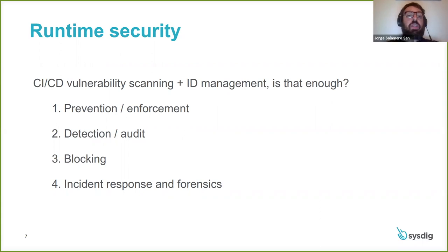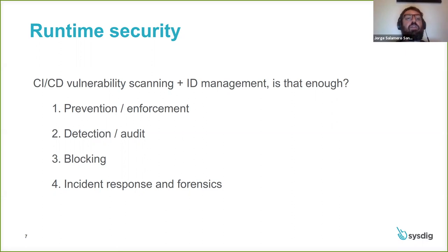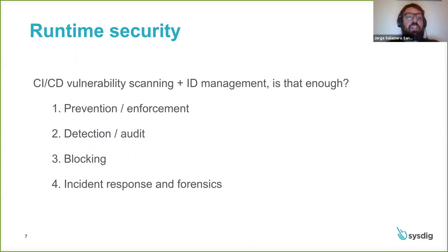When I explain runtime security, I like to split it into four phases. Number one is prevention or enforcement — this is basically when we set up all the permissions in Kubernetes on what you can and cannot do. The next step is detection or audit, which tells us if those barriers were bypassed or something got through. The third step is having the opportunity to block those attacks, like implementing a firewall but against the entire system, not just the network. Step number four, sometimes ignored but still very important, is being able to audit and record everything so we can do effective incident response and forensics — prevention, detection, blocking, and incident response and forensics.